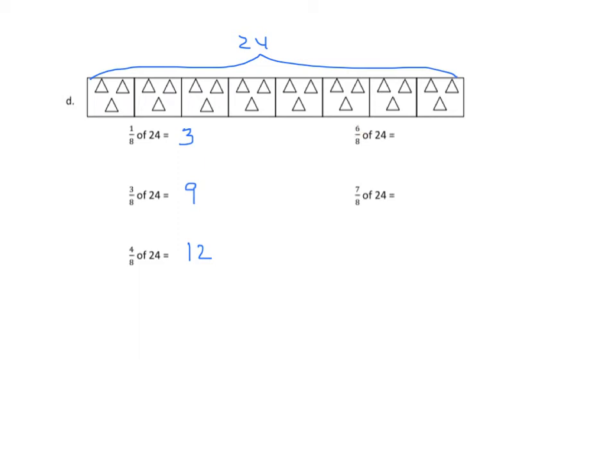And 6 times 3 is 18. And again, if we looked at this, we would see that indeed we have 18 because I have one, two, three, four, five, six groups of 3. That's 18. So seven-eighths of 24 is 21.